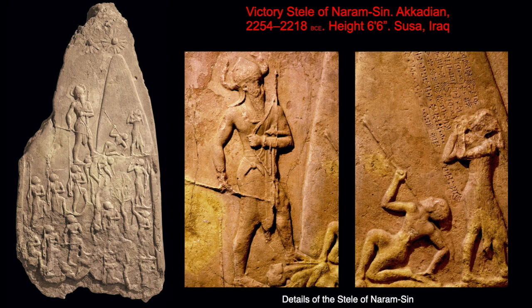This is Sargon's grandson Naram-Sin, depicted on a stele — a flat slab that would have been part of a wall or served as a monument. This narrative stele shows a military victory by Naram-Sin, proclaiming himself divine during his lifetime. It shows not only his military strength but his religious power. To show the relationship between man and gods, they used what's called hieratic or hierarchical scale — meaning the most important person is depicted as the biggest figure in the artwork, so even a first-time viewer knows 'the big figure must be the important one.'